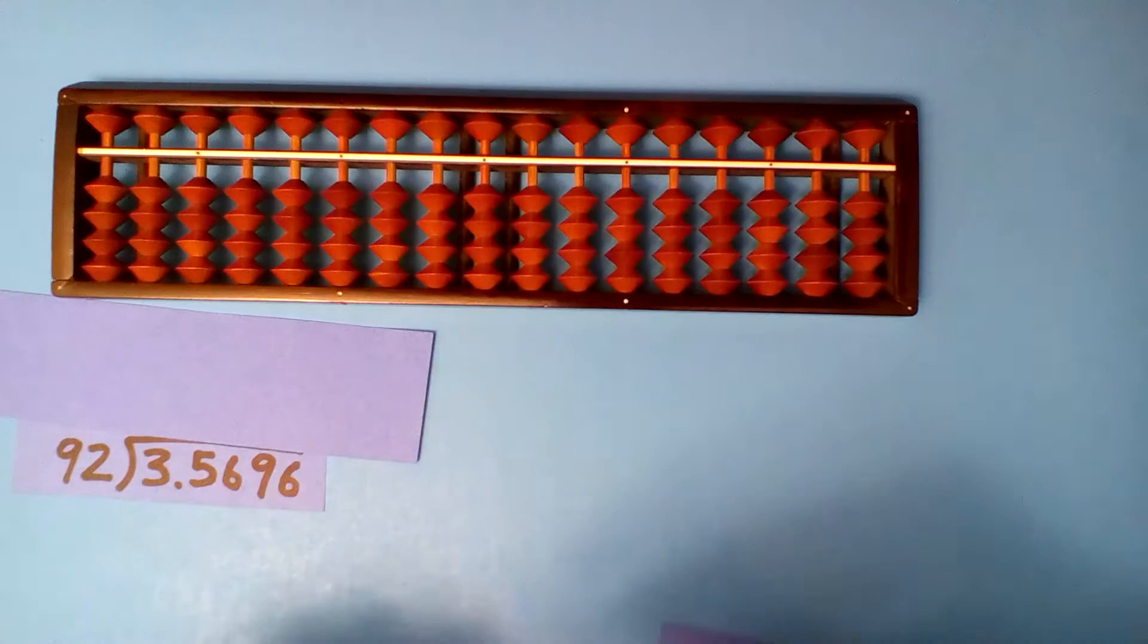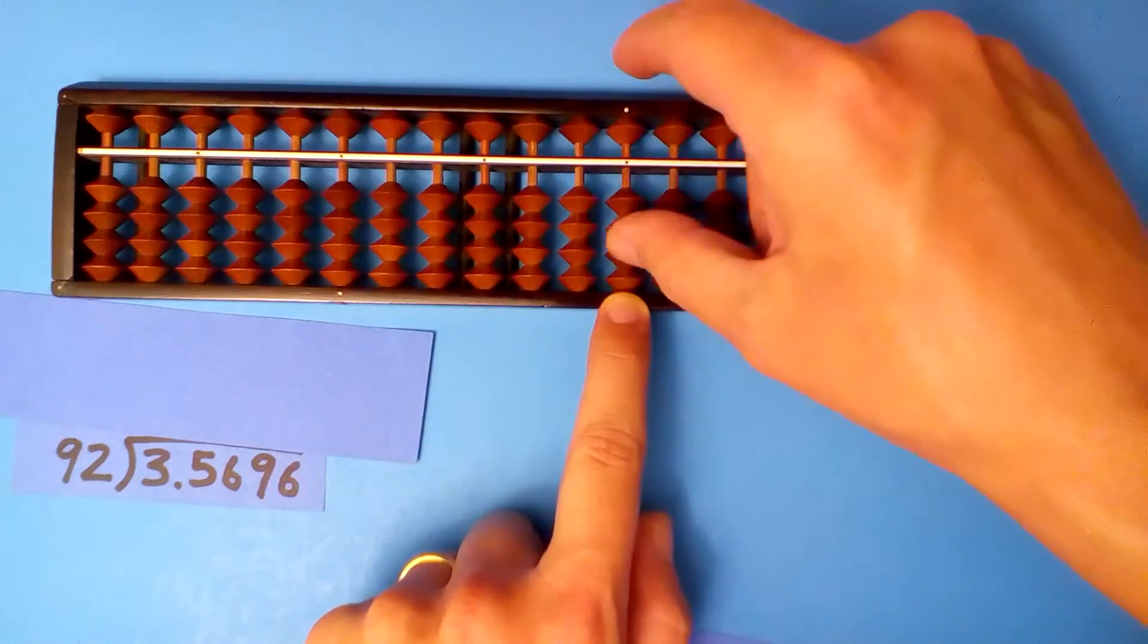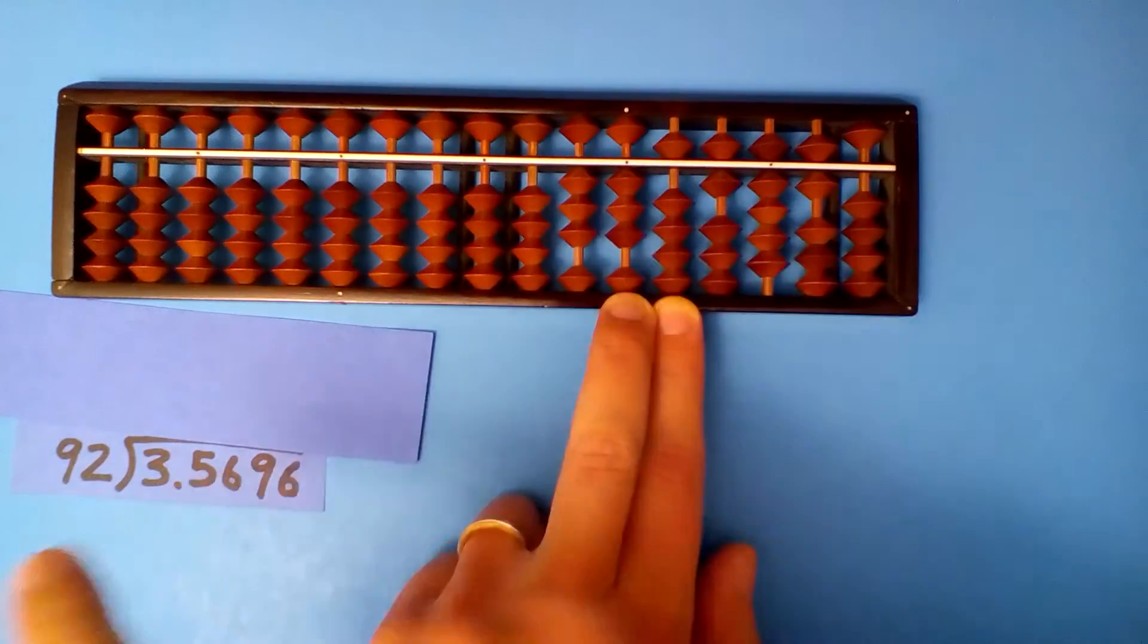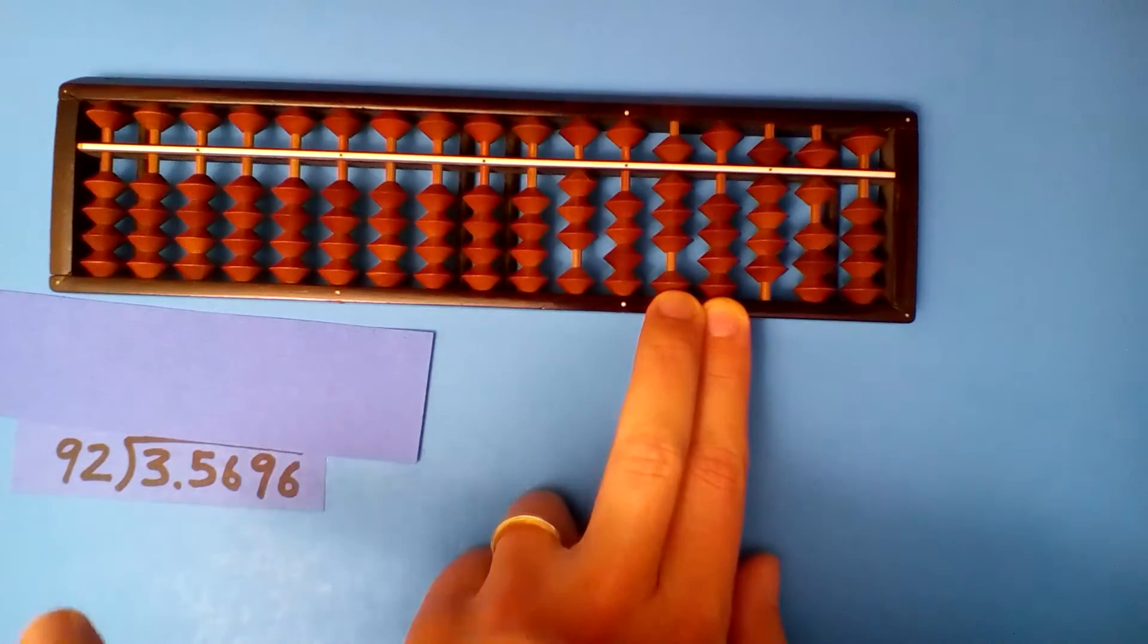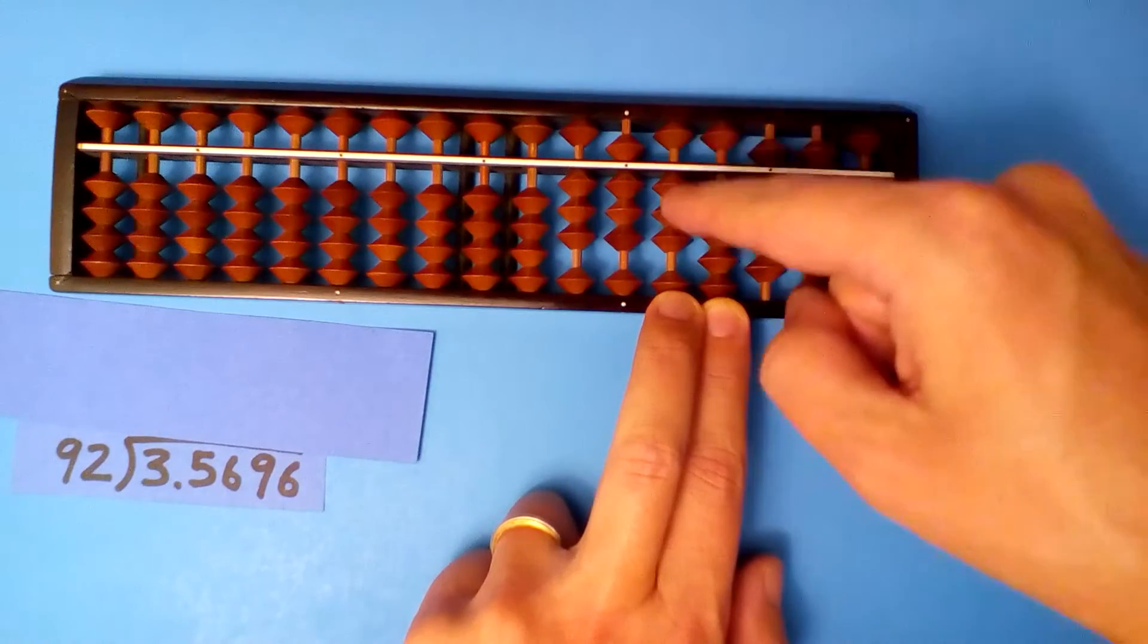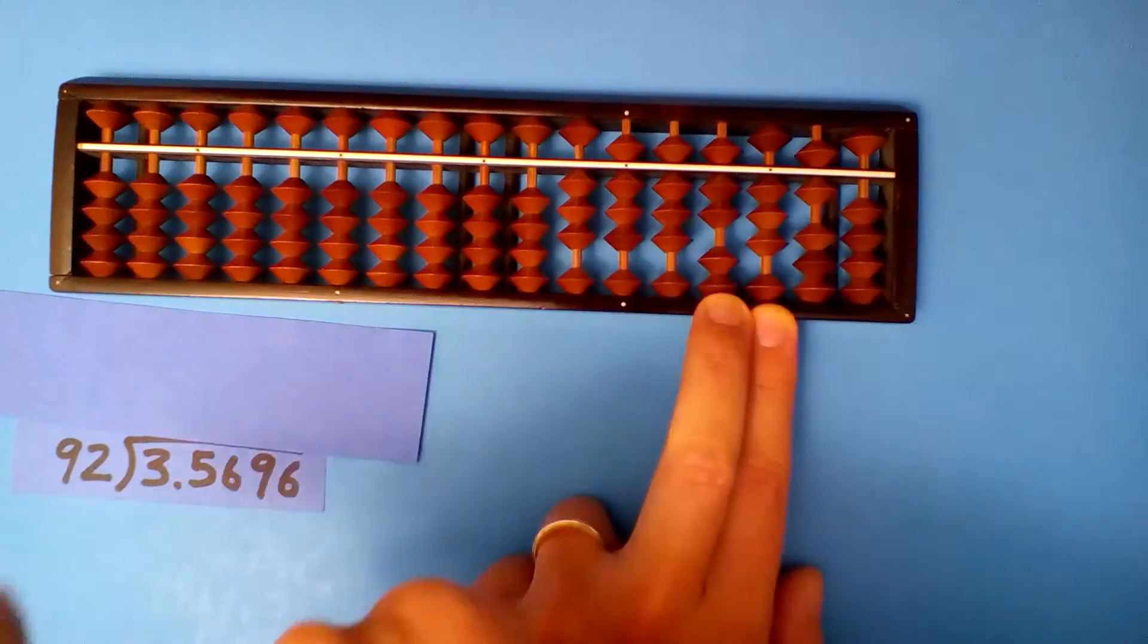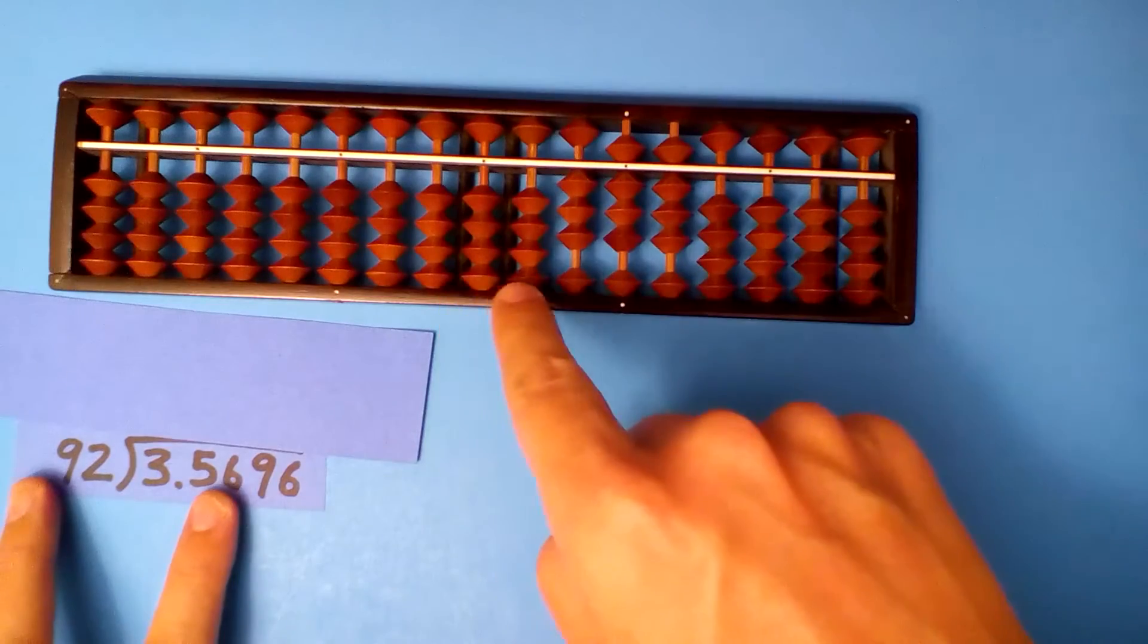23.5696 divided by 92. Start on the hundreds. There's one fewer digit in the dividend, so we go 1 to the right. Set up our dividend and divide. 9 goes into 35 three times. 3 times 9 is 27, 3 times 2 is 6. 92 into 88 times. 8 times 9 is 72, 8 times 2 is 16. 9 goes into 73 eight times. 8 times 9 is 72, 8 times 2 is 16. Our quotient is 0.0388.